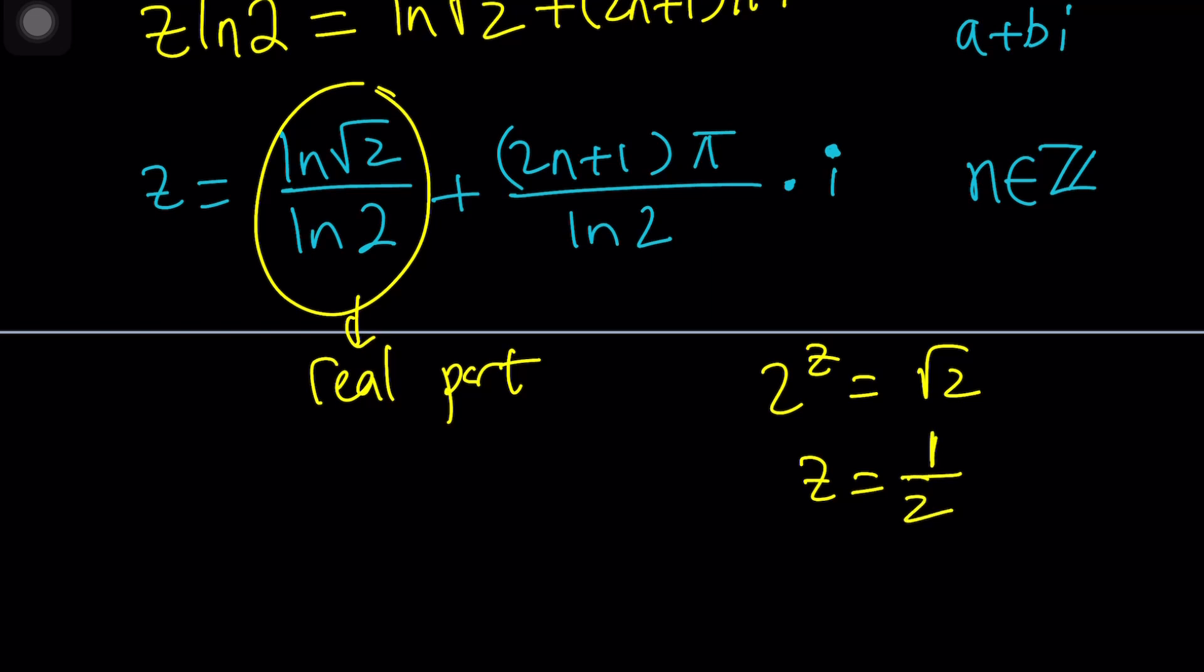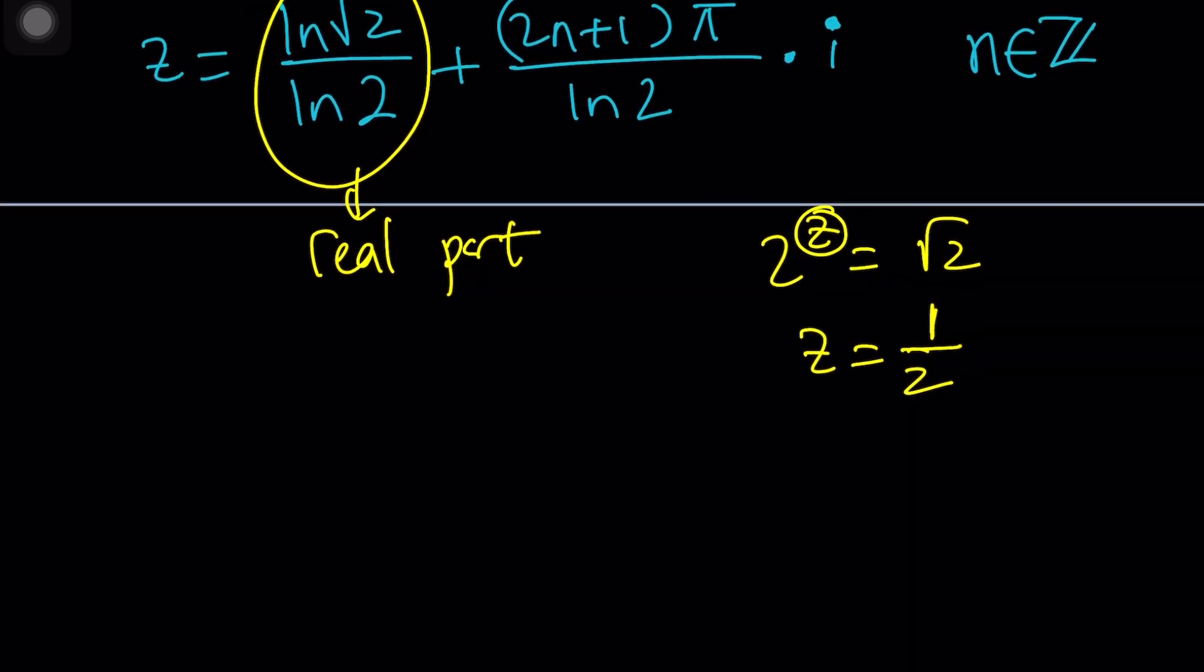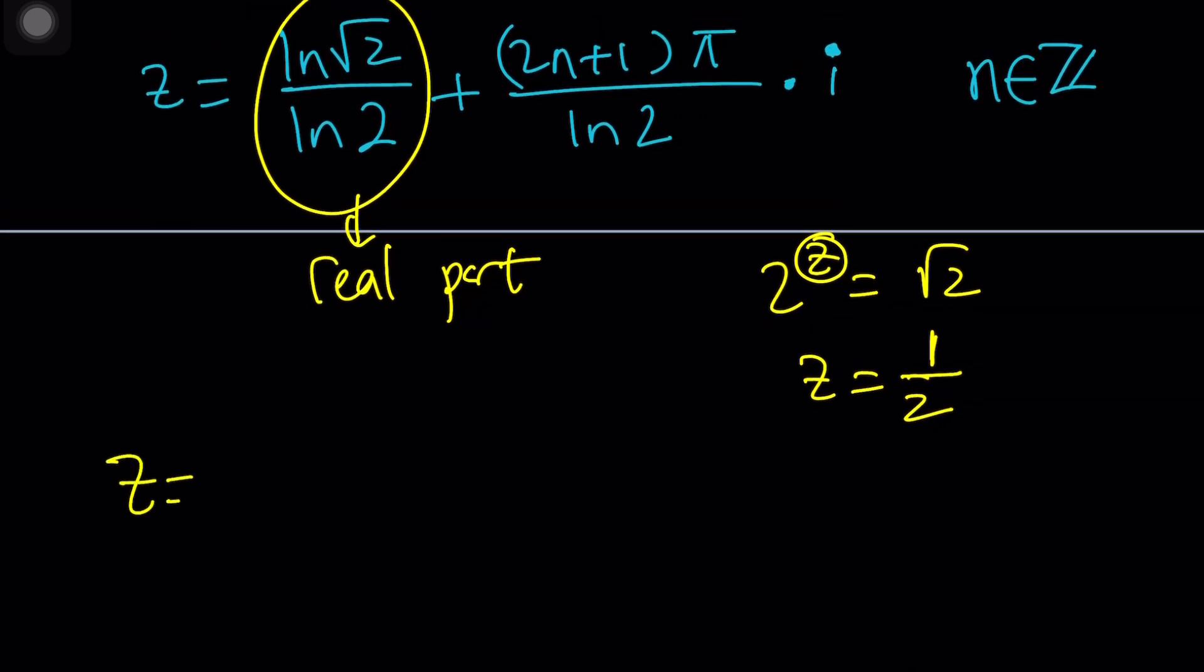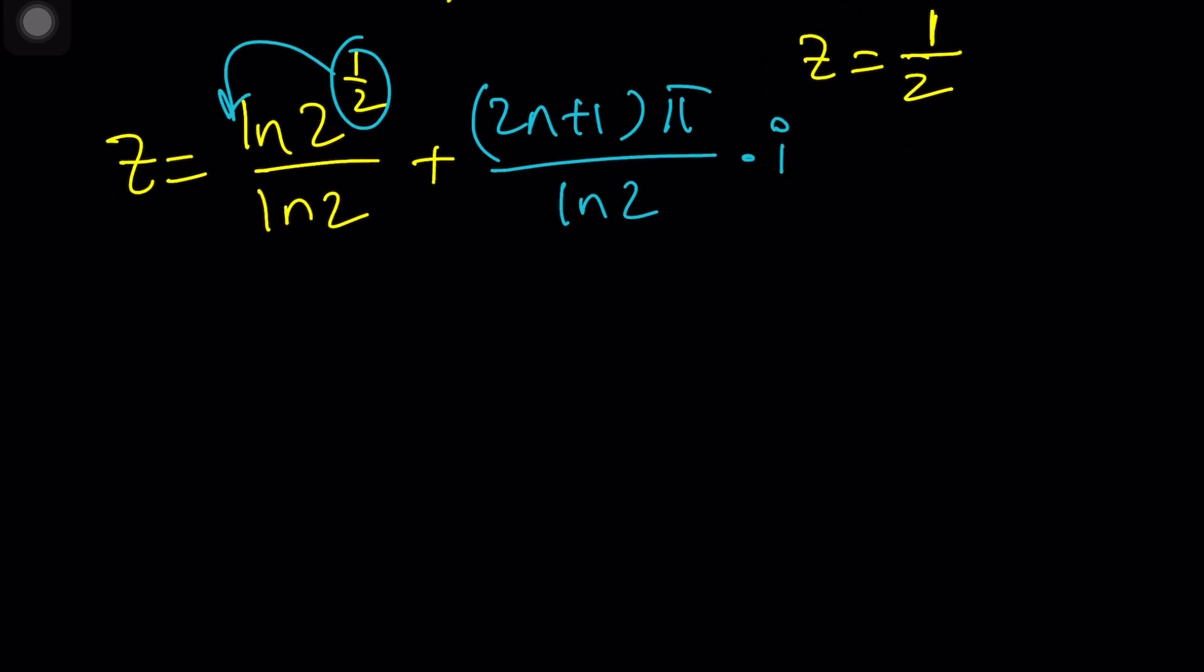Let's get back to it. Here, we're going to get something interesting. Root 2 can be written as ln 2 to the power 1 half. And from here, we can move this to the front. And that's where we get our real part as 1 half. So yes, 1 half is not a solution, but the solution has 1 half as the real part. Because this is going to become 1 half ln 2 divided by ln 2.